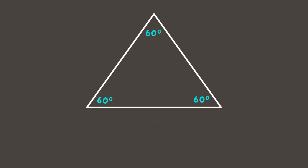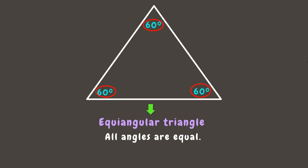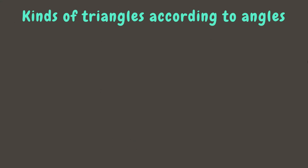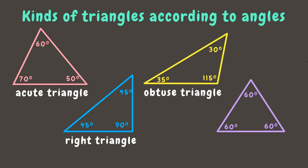Last one. We can see that this triangle has angles that all measure 60 degrees. If we see a triangle like this, we can call it an equiangular triangle. In an equiangular triangle, all angles are equal and measure 60 degrees. Now let's recall the kinds of triangles according to its angles: we have acute triangle, right triangle, obtuse triangle, and equiangular triangle.